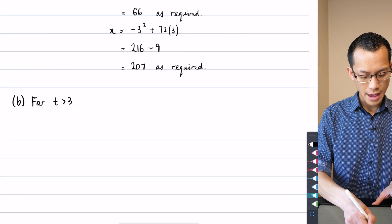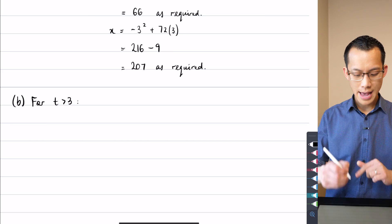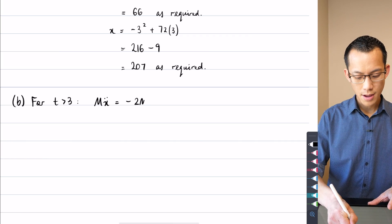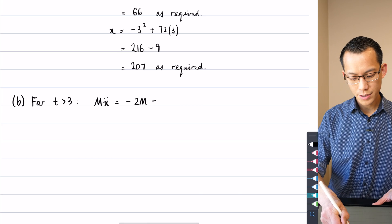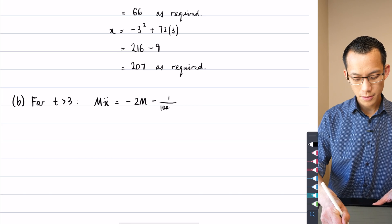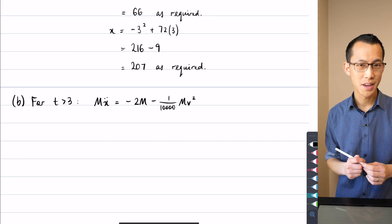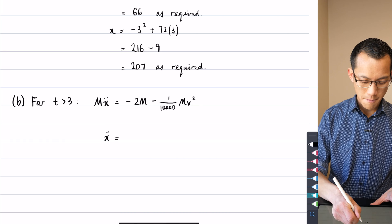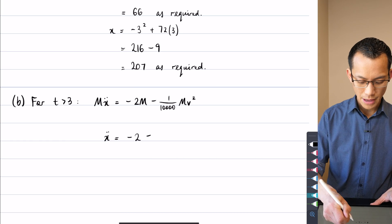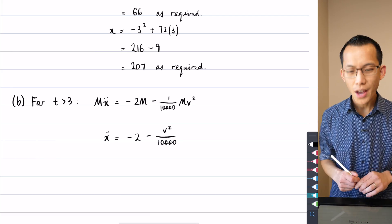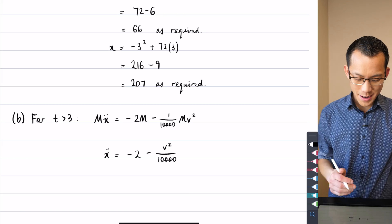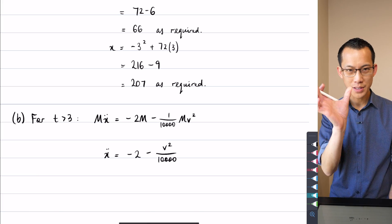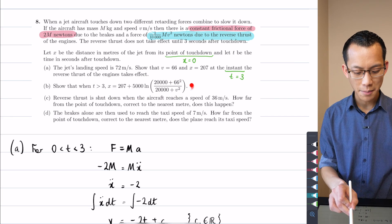So I'm going to make a very similar argument to what I did here, except in addition to this minus 2m, there will also be this minus 1 over 10,000 mv squared. Okay, so let's write that down. For t is greater than 3, what am I going to get? Well, I'll have the force, which is mass times acceleration. That's going to be, we've got the constant frictional force there from the brakes. And then we also have the minus 1 over 10,000 mv squared. And that comes from the reverse thrust. So just like I did before, I'm going to divide both sides by the mass and that gives me an acceleration equation, minus 2 minus, I'm going to pop that v squared up on the numerator, like so.